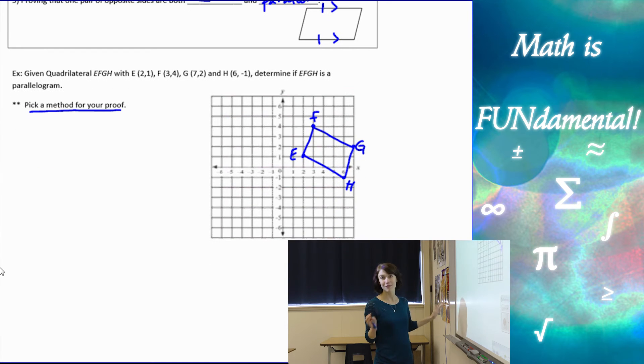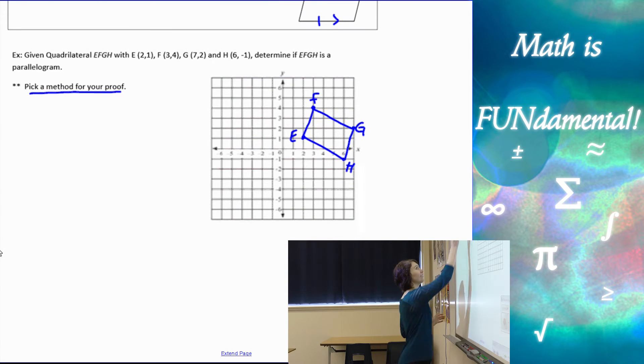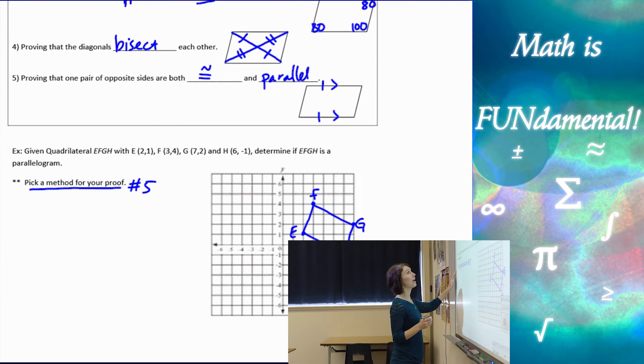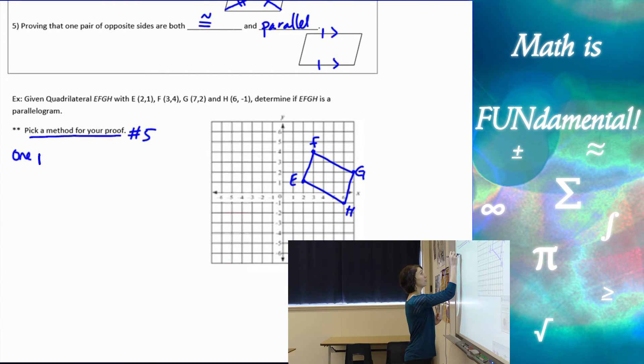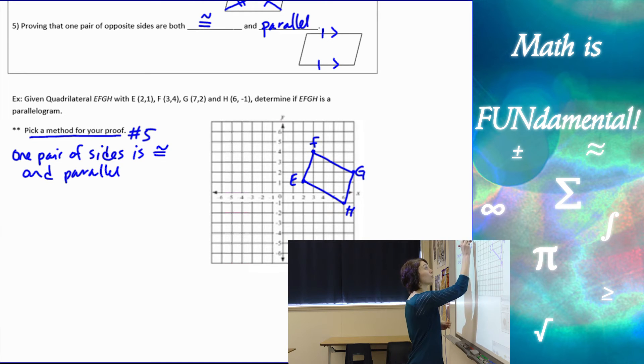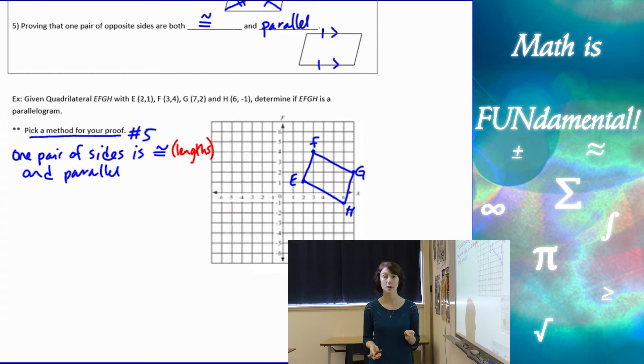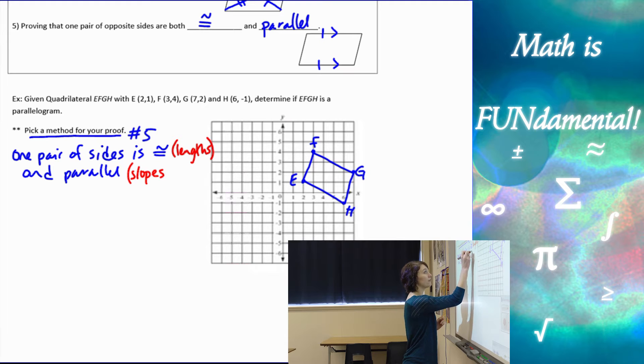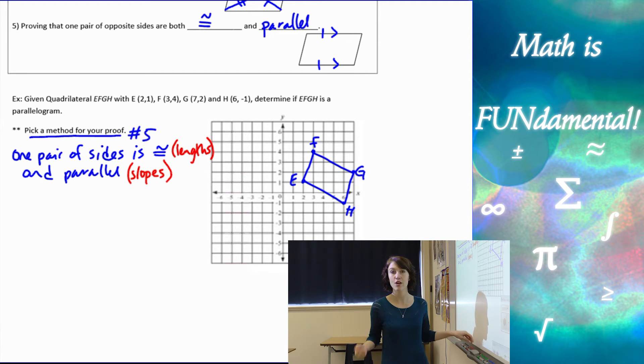I like to stick with method one, four, or five. Because number five is a little different, I'm going to go with that one. For method five, we have to prove that one pair of sides is congruent and parallel. To prove the sides are congruent, we need to find the lengths of two opposite sides. To prove they're parallel, we need to find the slopes, showing that the slopes are the same.